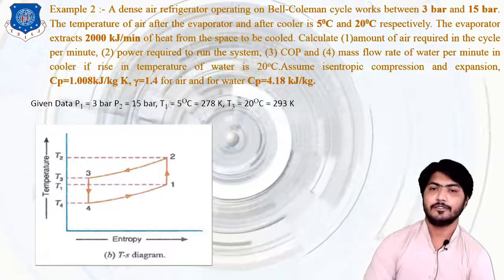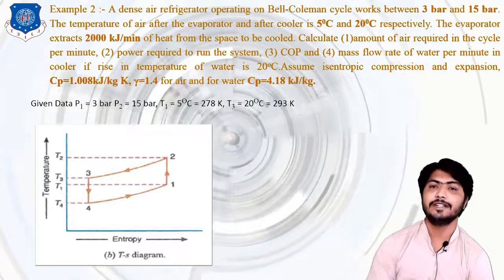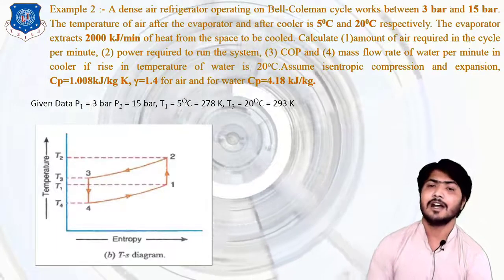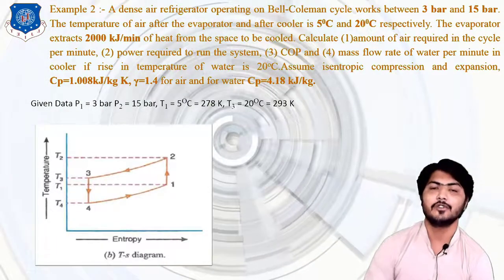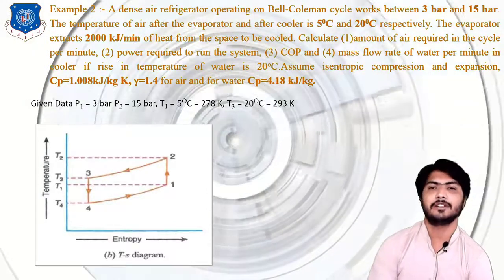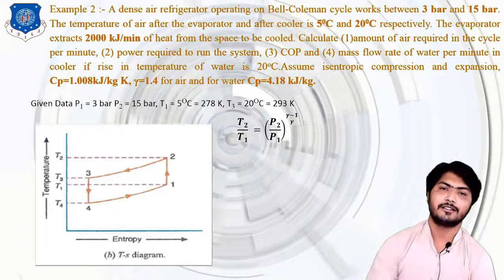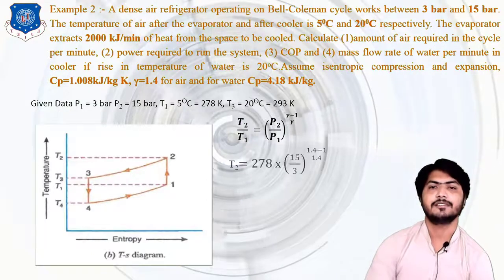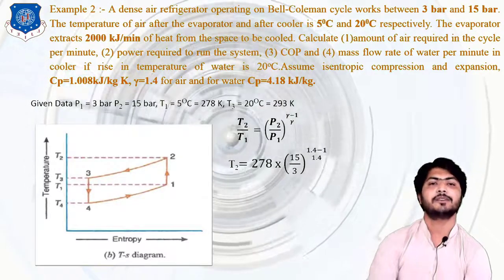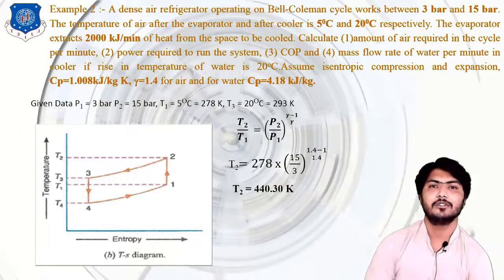We first calculate all four temperatures; T1 and T3 are given, so we find T2 and T4. For T2, using the isentropic compression process equation T2/T1 = (P2/P1)^((γ−1)/γ), substituting T1 = 278 K, pressure ratio = 15/3 = 5, and (1.4−1)/1.4, we obtain T2 = 440.30 K.